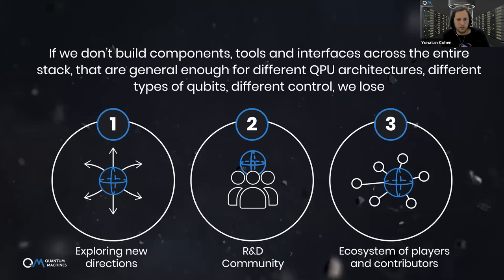We can make only the top layer common to all QPUs, which gives freedom to optimize along the entire stack. But there's a big problem: spending years on controls too specific to one system could lead to significant waste and slow down progress dramatically. If we don't build components, tools, and interfaces across the entire stack that are general and flexible enough, we risk losing critical flexibility needed to explore new developments.